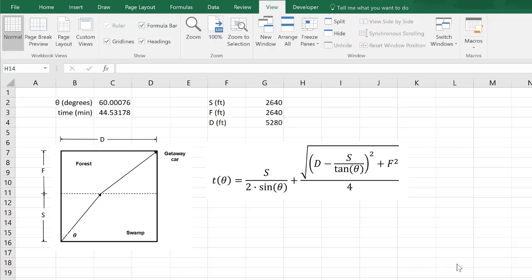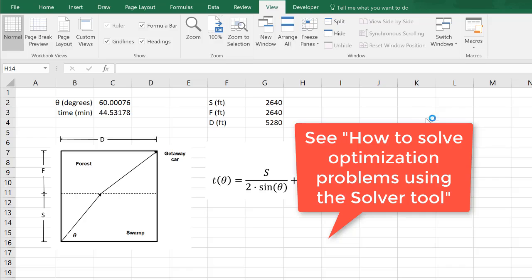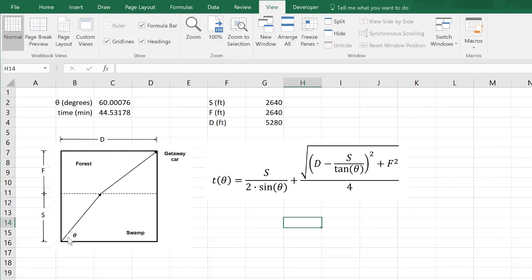So I've set this up. This is a modification of a spreadsheet that I showed in one of the earlier screencasts. I've changed the problem statement around a little bit. Instead of having 2,640 feet or a half mile of the swamp and the forest, and exactly 1 mile for the width here, I'm turning that into S for the swamp, we can change that distance, F for the forest, and D for this total distance here to the getaway car.